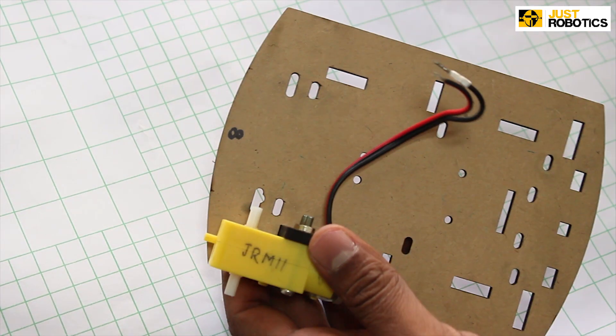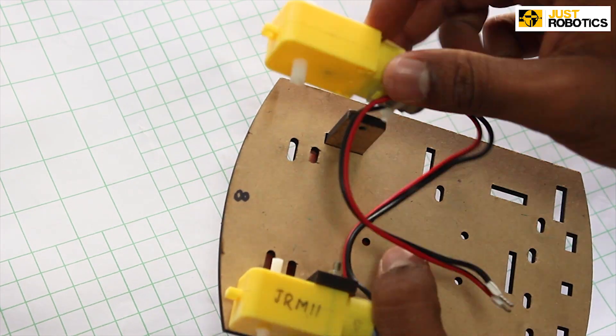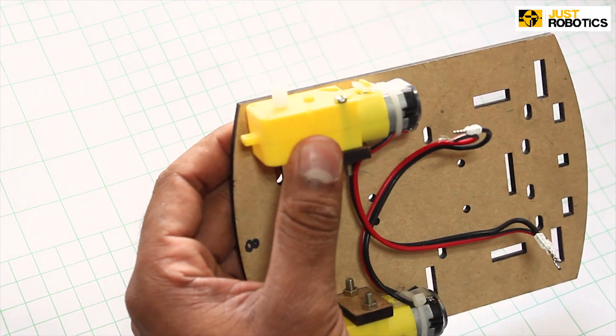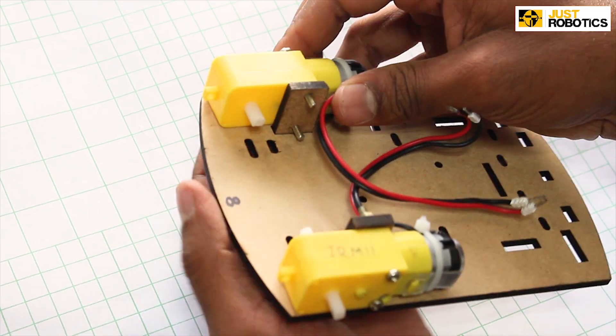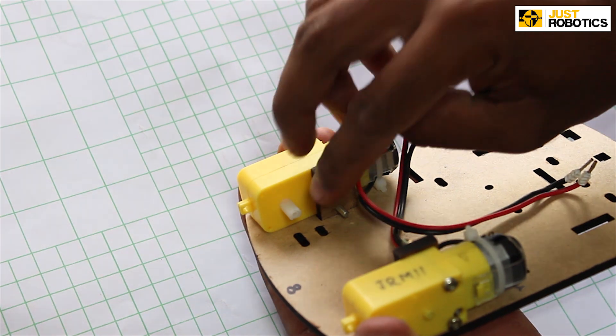Now do the same with the other battery operated motor as well. Take your T-clamp, put your motor and put the bolts through the holes present in the motor and then fasten it with the help of nuts. Turn, turn, turn all the way down.